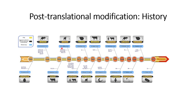The next post-translational modification is ubiquitination. In ubiquitination, proteins that are non-functional, or that are not able to acquire their native structure, need to be transferred for recycling. One process for this recycling is via ubiquitination, after which proteins are directed towards proteasomal degradation.